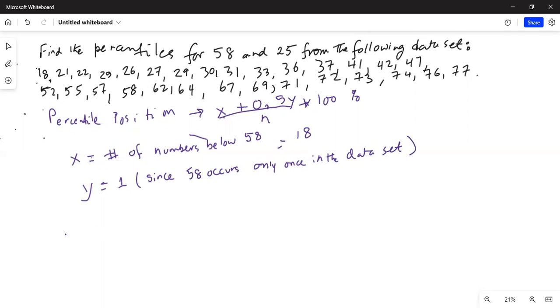So if you plug in the data set, it is equal to - x is 18 plus 0.5 times y is 1, divided by n. And n is - if you count - n sample size is 1, 2, 3, 4, 5, 6, 7, 8, 9, 10, 11, 12, 13, 14, 15, 16, 17, 18, 19, 20, 21, 22, 23, 24, 25, 26, 27, 28, and 29. So n is 29.